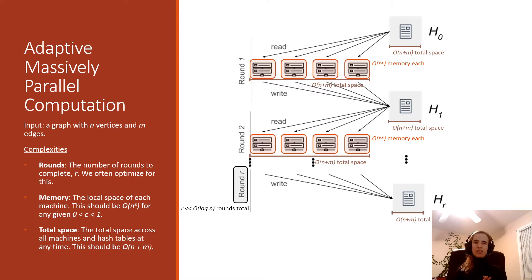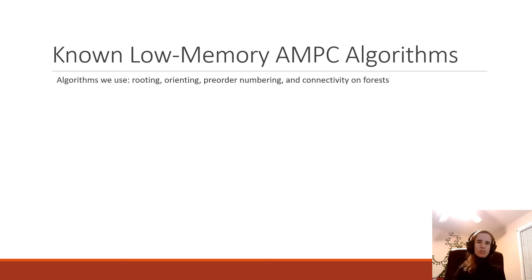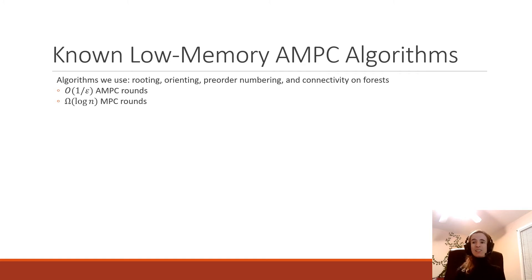Let's look at known low-memory AMPC algorithms we'll use and compare against: rooting, orienting, pre-order numbering, and connectivity on forests. These have all been shown to run in O(1/ε) AMPC rounds, whereas by the one-versus-two-cycle conjecture they are believed to require at least O(log n) MPC rounds. Since we want to implement our algorithms efficiently using these functions, we need to implement them in AMPC rather than MPC.